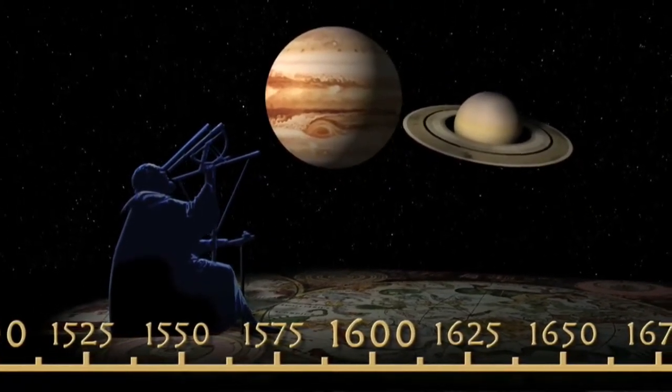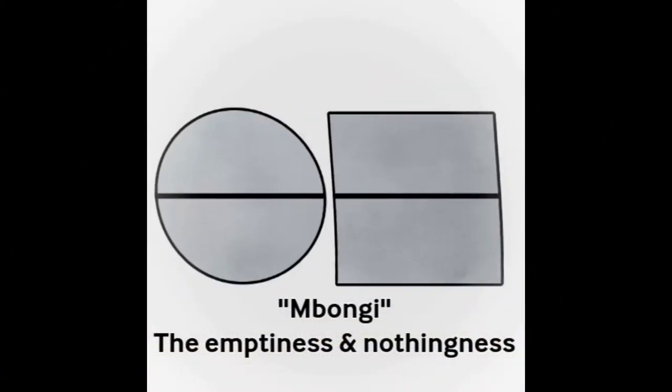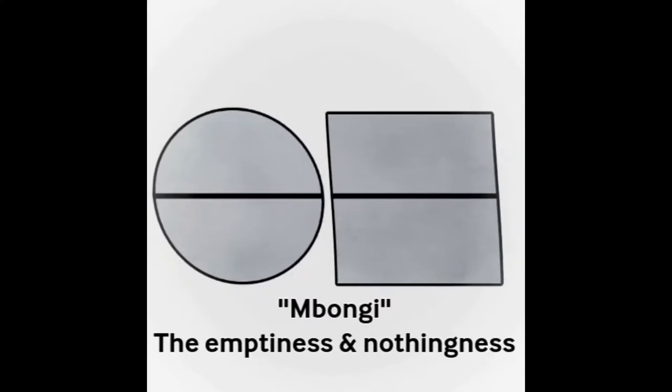What the Bantu Congo theorized is in the beginning there was Mbongi. Mbongi means the emptiness and nothingness. The Bantu Congo used charts and graphs to illustrate Mbongi. The circle and the square represent the same thing, a world with nothing in it and no visible form.